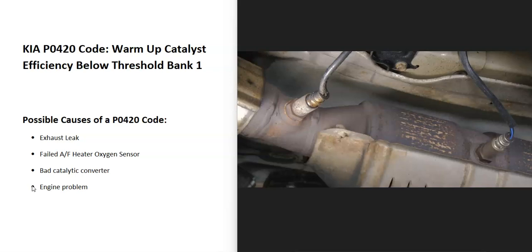If you don't have any engine problems and you don't have any exhaust leaks, then either the sensors or the catalytic converter has gone bad. You can test the sensors — if they test good, then very likely the catalytic converter has gone bad. Or you can test the catalytic converter — if it tests good, very likely the sensors have gone bad. Most people start by testing the sensors. You can use a multimeter or an OBD2 scan tool. Keep in mind that if anything is wrong with the wiring — an open, short, or bad connection — it will cause the same symptoms as a bad sensor.